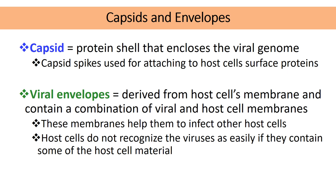Viruses are very tricky — they try to fool your immune system. Your immune system has cells whose main goal is to destroy or kill foreign invaders. A virus consists of a capsid, which is basically a shell made out of a bunch of proteins that encapsulates the genetic material. A virus also has what we call capsid spikes, whose main goal is to attach to the host cell's surface.